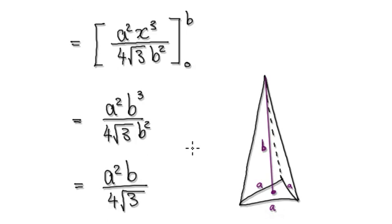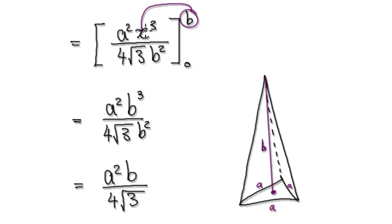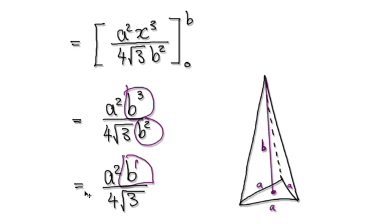So now you've got to put b into here, so that will be b to the power of 3, and then when you put 0 into here, the whole thing will be 0. So we only need to take care of b to the power of 3. So now this b to the power of 3 will cancel out with this b squared, that will just give you b to the power of 1.